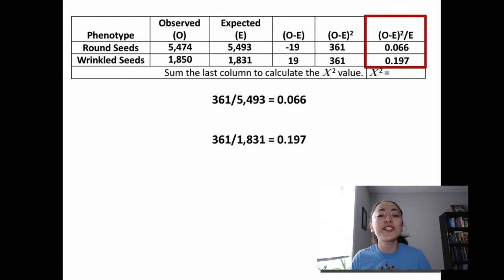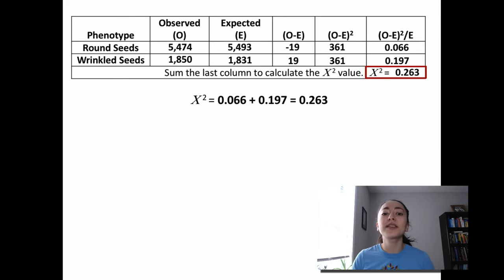Then to calculate the chi-square value, which we will need to find our p-value later on, we simply sum the last column of our table. 0.066 plus 0.197 equals 0.263. So 0.263 is our chi-square value.